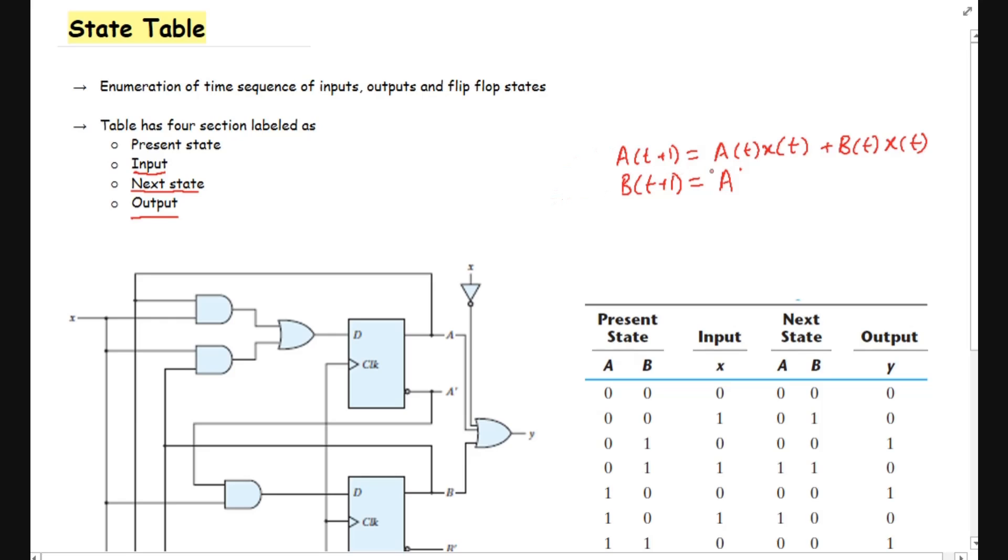B(t+1) is the function of A'(t) and x(t) and the output was a function of A(t) plus B(t) times x'(t). So these are the state equations.